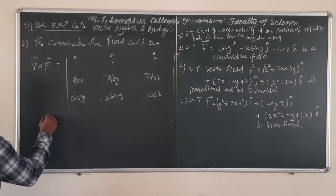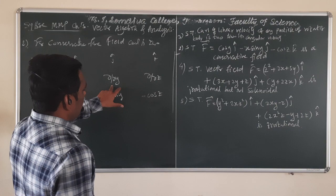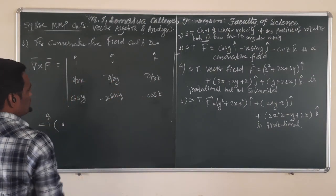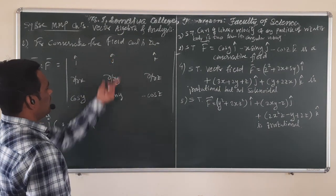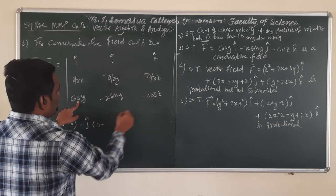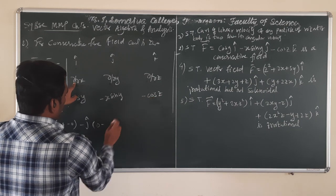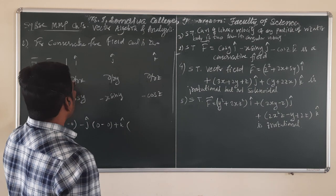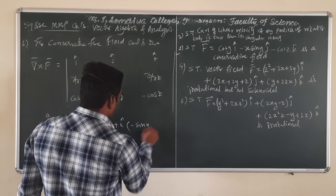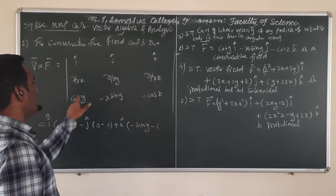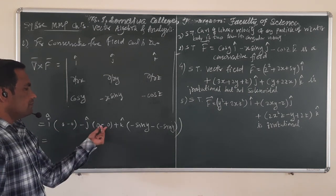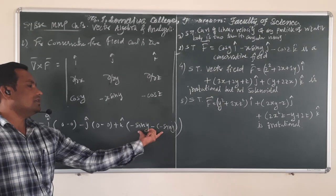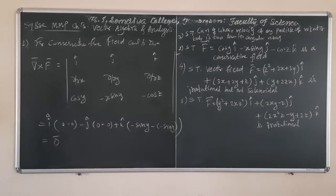Now we solve this determinant. For i cap: partial derivative of minus cos(z) with respect to y is zero, and partial derivative of minus x·sin(y) with respect to z is also zero, giving 0 minus 0. For minus j cap: partial derivative of cos(y) with respect to z is zero, and partial derivative of minus cos(z) with respect to x is also zero. For k cap: partial derivative of minus x·sin(y) with respect to x gives minus sin(y), and minus(minus sin(y)) gives plus sin(y), so that term also becomes zero. We get the zero vector on the right-hand side.